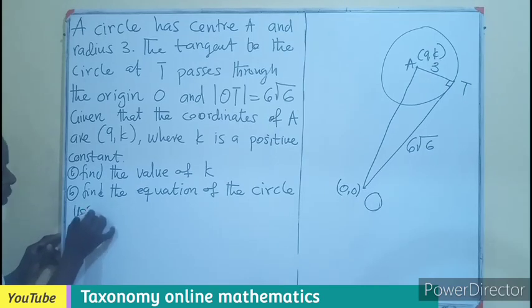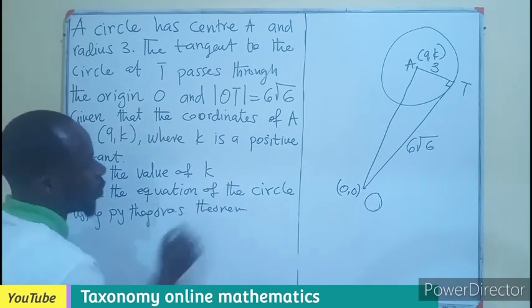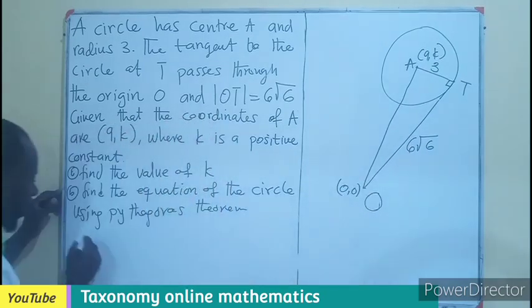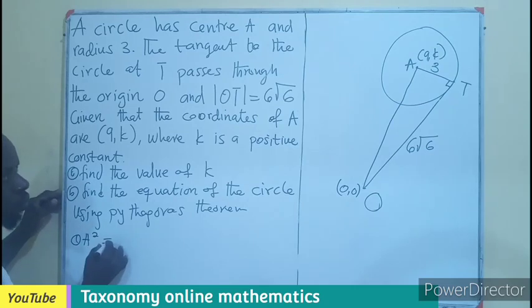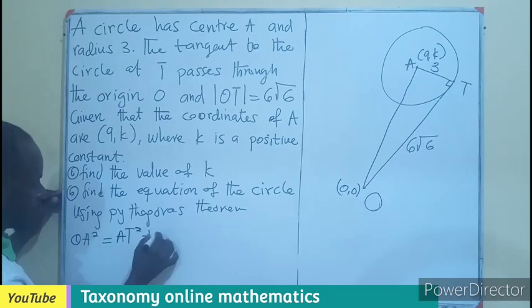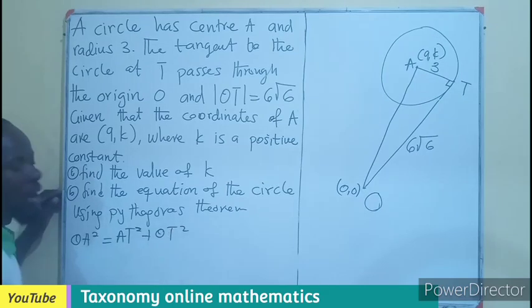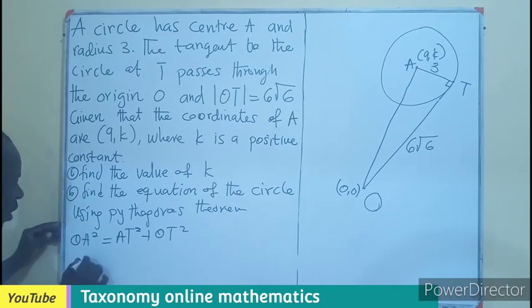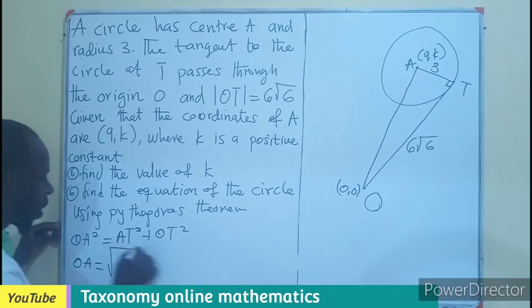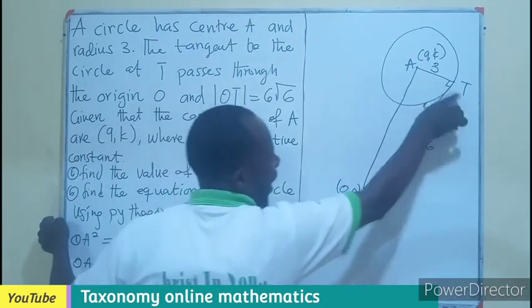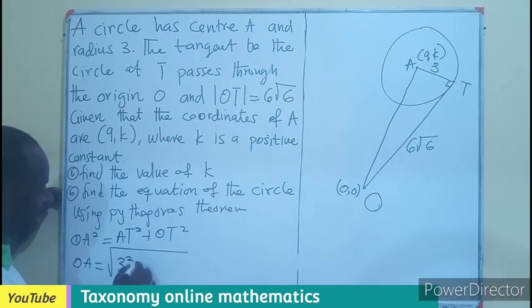So from there, using Pythagorean theorem, we can see that this is going to be the hypotenuse. So your OA squared should be equal to AT squared plus OT squared. And so in this, I can have my OA equals to the square root of AT. And where is the AT? The length is 3, so I'll be having 3 squared. Then OT is going to be 6 root 6 squared.